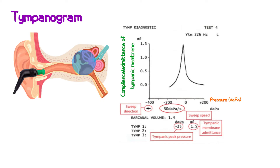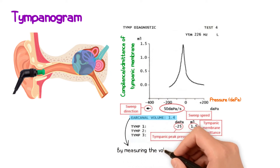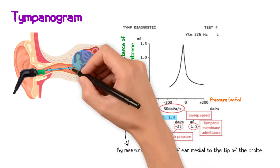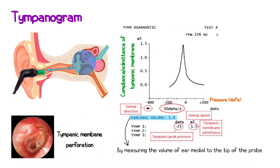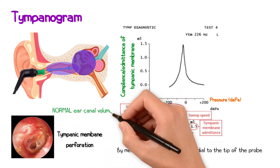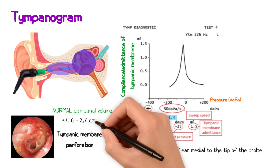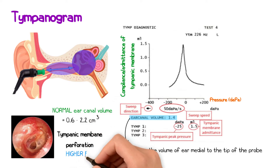The tympanogram also provides an estimate of the ear canal volume by measuring the volume of air medial to the tip of the probe. If the tympanic membrane is perforated, the ear canal volume estimation will include the volume of both the ear canal and the middle ear space. A normal ear canal volume is typically between 0.6 to 2.2 cm³, and so an ECV higher than this is suggestive of a tympanic membrane perforation.